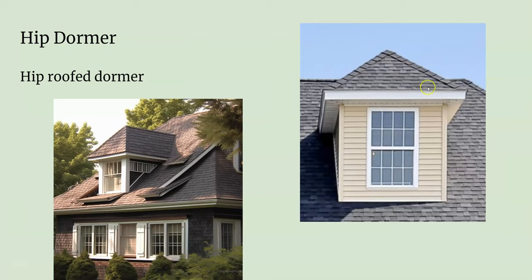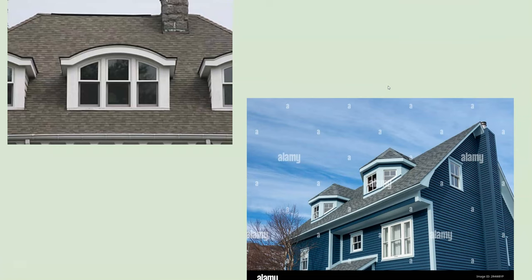Then you have hip dormers, which are like gable and shed dormers but with a hip roof on them. There are all different types of dormers out there — pretty much whatever the architect or engineer can dream up. It's up to the framer to get it done.